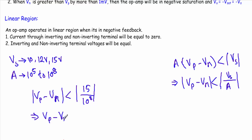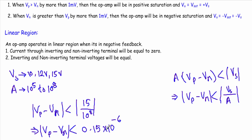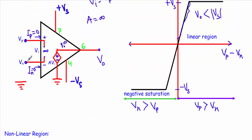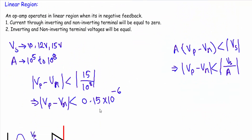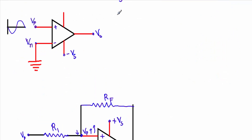If we want to operate the operational amplifier in the linear region, the voltage difference VP minus Vn must be less than Vs divided by A. Taking Vs equal to 15V and gain equal to 10^8, the magnitude of VP minus Vn must be less than 0.15 microvolts — meaning the input voltage difference must be only a few microvolts to keep the op-amp in the linear region.